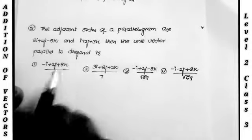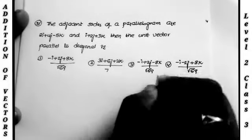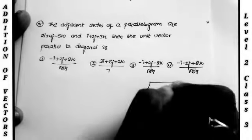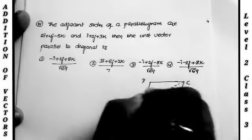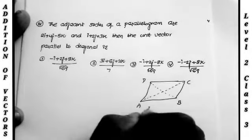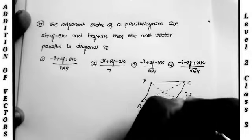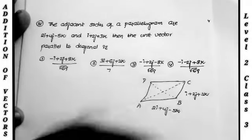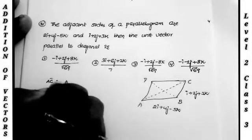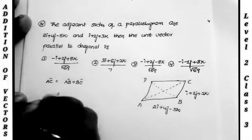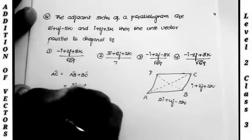Next: The adjacent sides of a parallelogram are 2I plus 4J minus 5K and I plus 2J plus 3K. Find the unit vector parallel to the diagonal. Take the parallelogram as ABCD. The first diagonal is AC bar equals AB bar plus BC bar, which gives 3I plus 6J minus 2K. Since this is not among the options, we move to the second diagonal.